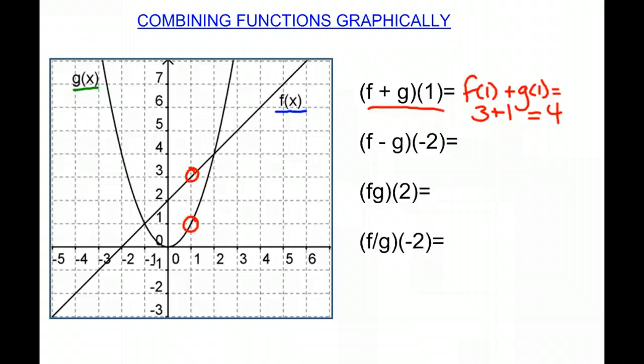Now looking at our next equation, f minus g of negative 2. Again, we are taking f of negative 2, and we are subtracting g of negative 2 to find our solution. So f of negative 2 is 0, g of negative 2 is 4. So we have 0 minus 4, which is negative 4. So our function f minus g of negative 2 is going to equal negative 4.